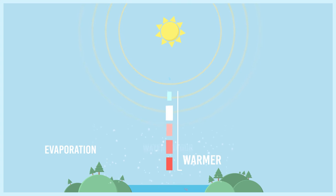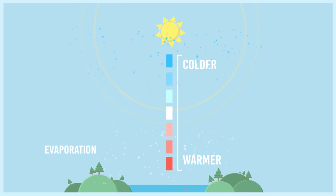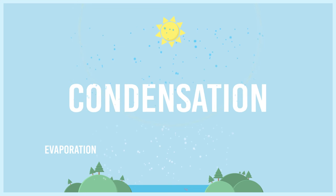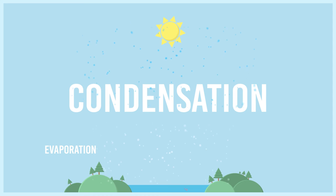The further you move away from the surface, the cooler the temperature gets, so water vapour gas turns back into tiny particles of liquid water. This process is called condensation, which is the opposite process of evaporation. Now back to liquid, the water starts sticking to microscopic dust and salt particles that are light enough to be floating around in the atmosphere. This creates water droplets, and these water droplets hit each other to create bigger droplets and eventually form a cloud.